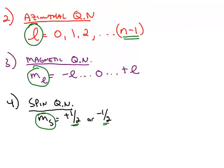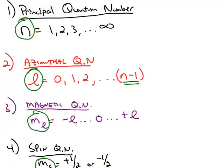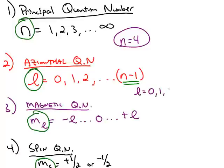It's important that you memorize these rules. For example, let's say that n is equal to 4. That fits the rules because it's between 1 and infinity and it's a whole number. But once we determine the value of n, that limits the choices for l. In this example, l could be 0, 1, 2, or 3.